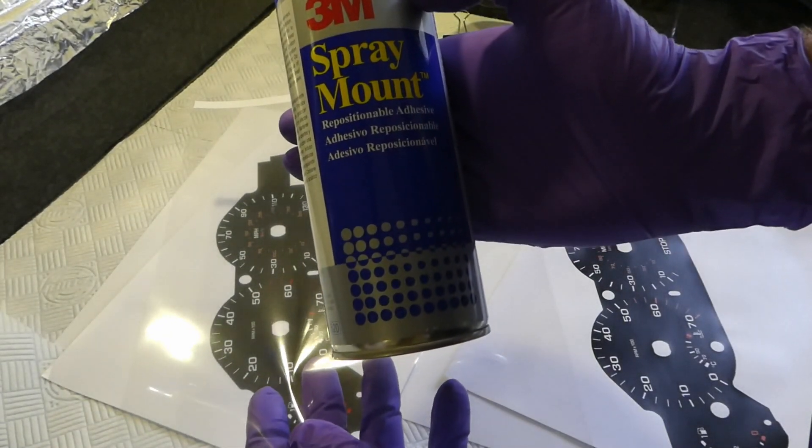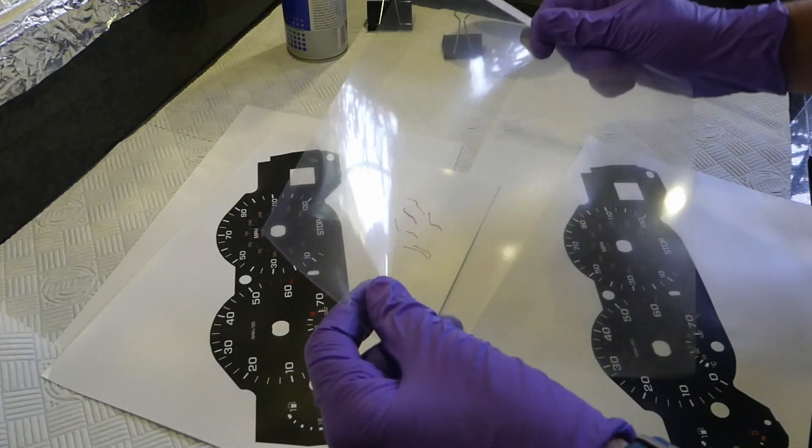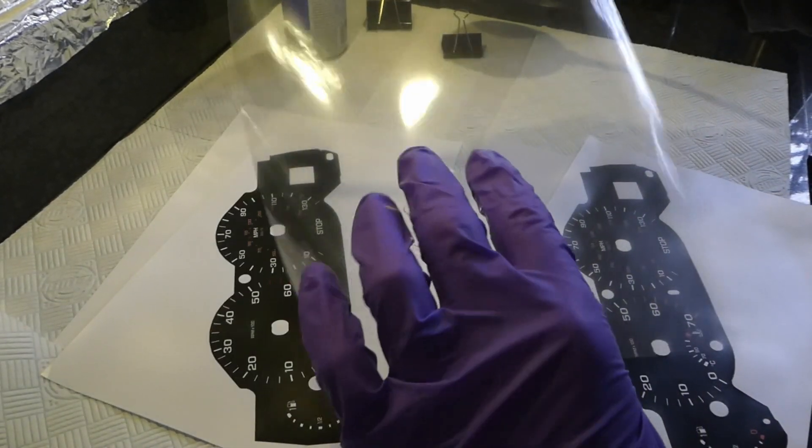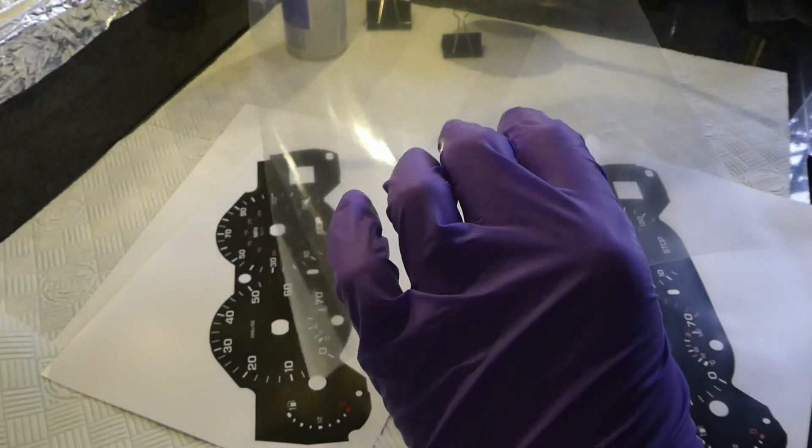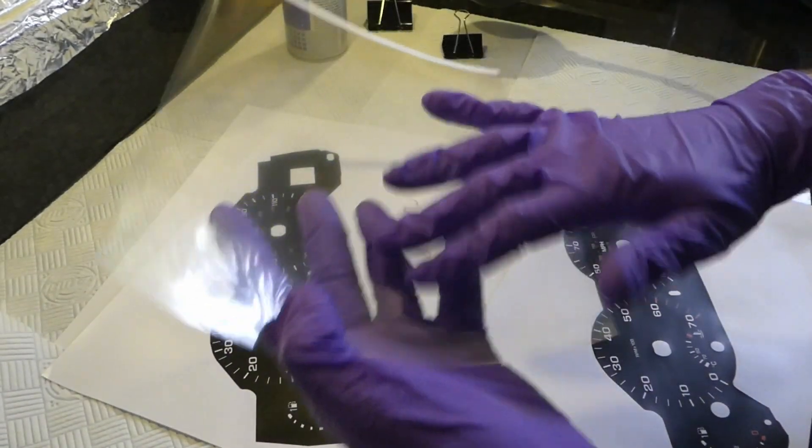This 3M spray mount adhesive. So it glues and sets and becomes pretty hard. So there is the shiny part. So there is the shiny side that doesn't have adhesive. So I'll normally put the rough side underneath.